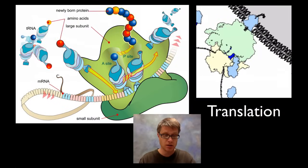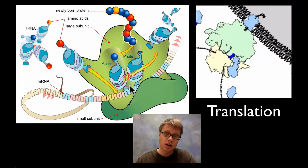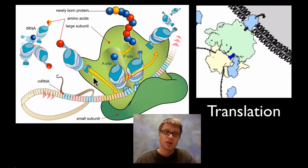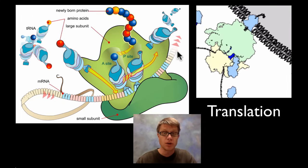So how does translation work? Let's kind of orient ourselves because this diagram seems crazy. Here's our messenger RNA moving through a ribosome. A ribosome is where we make proteins. It's going to have two parts to it — a small subunit, that's this bottom part, and a large subunit on the top. And then the messenger RNA is going to flow right through it.